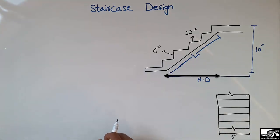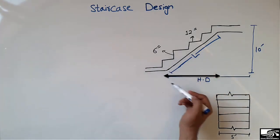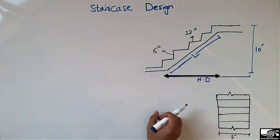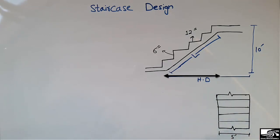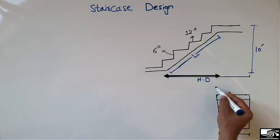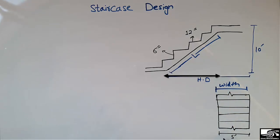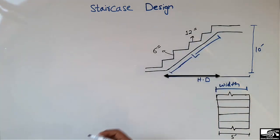Let's consider this example of a staircase. You can see here the side view or elevated view of the staircase, while this is the plan of the staircase, in which you can see the width of the staircase. This width is 5 feet, which is usually used in normal houses.